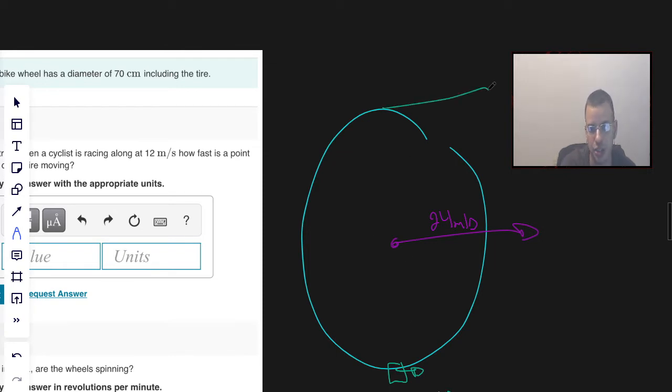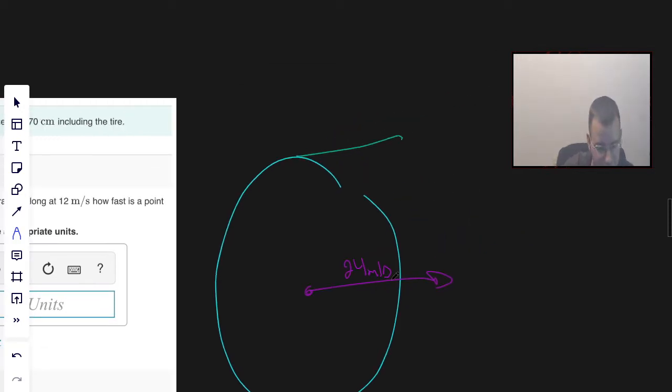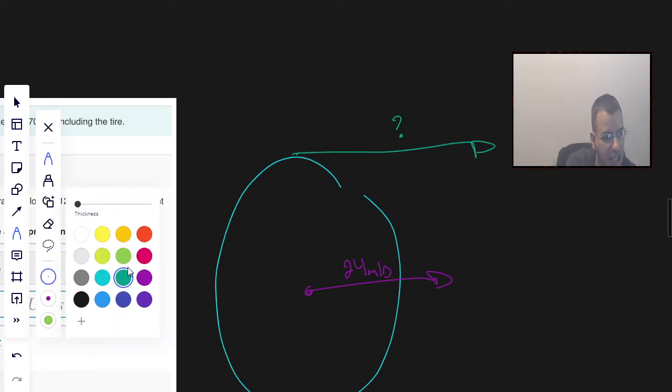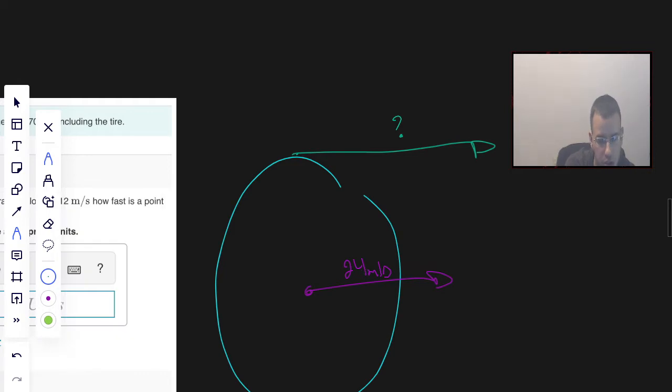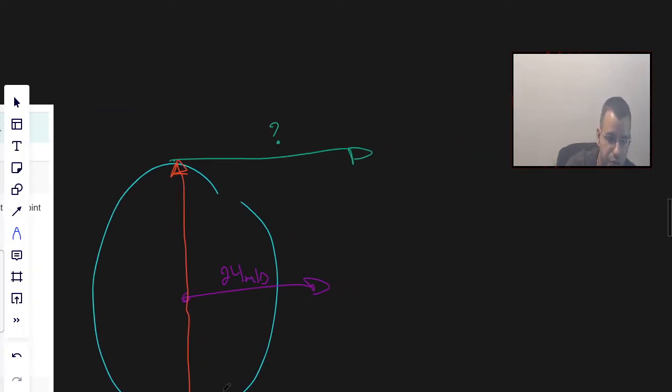And then the question is, how fast is the top of the wheel moving? The way we do this is using basically similar triangles. The short answer is double. The longer answer is you look at these two triangles and do similar triangles.